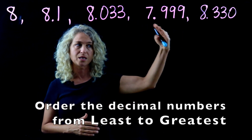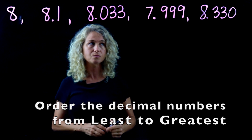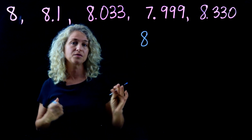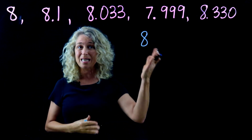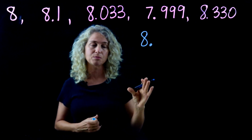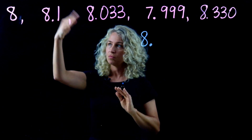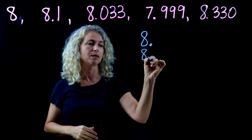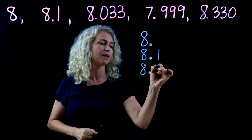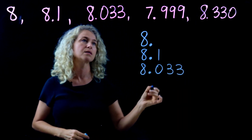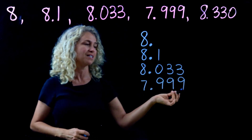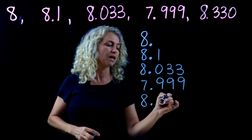The very first step is to rewrite the numbers and stack them according to the decimals. Starting with the number eight — you have to know where the decimal is, because you don't see one. This is the ones place; your decimal is always to the right of the ones place. So let's rewrite and stack: line up the decimals — eight and one tenth, eight and thirty-three thousandths, seven and nine hundred ninety-nine thousandths, and eight and three hundred thirty thousandths.